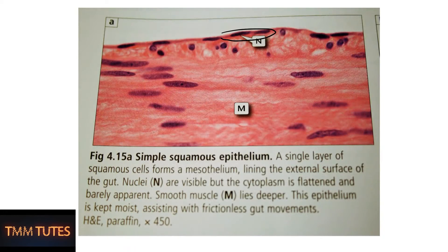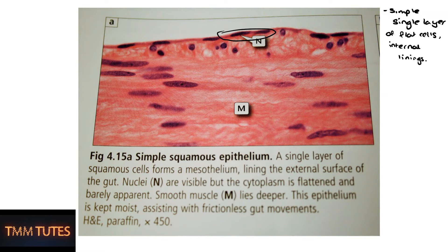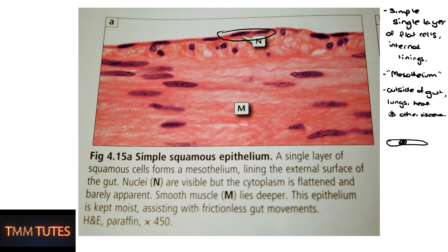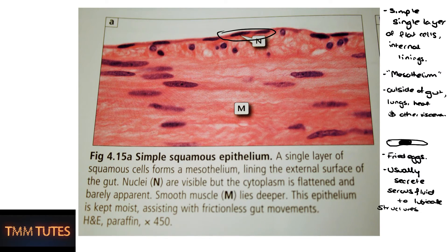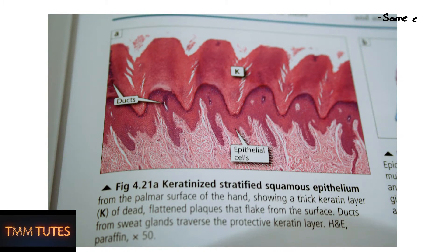Here we have simple squamous epithelium. Simple squamous — a single layer — is usually found on internal surfaces along organs like the heart, lungs, and other viscera, and can be called mesothelium. The squamous cells can be difficult to see; they sort of look like a fried egg cut in half — a long thin cell with a big flattened nucleus. In these mesotheliums they often secrete a serous fluid that lubricates the organs in the compartments they lie in.